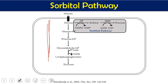In the sorbitol pathway, glucose is converted to sorbitol by an enzyme called aldose reductase, which requires NADPH. Sorbitol is then converted to fructose by sorbitol dehydrogenase, which requires NAD⁺. In retinal cells, there is a high amount of aldose reductase, but proportionally very little sorbitol dehydrogenase. So glucose is converted to sorbitol, but sorbitol cannot be efficiently converted to fructose, resulting in an accumulation of sorbitol.